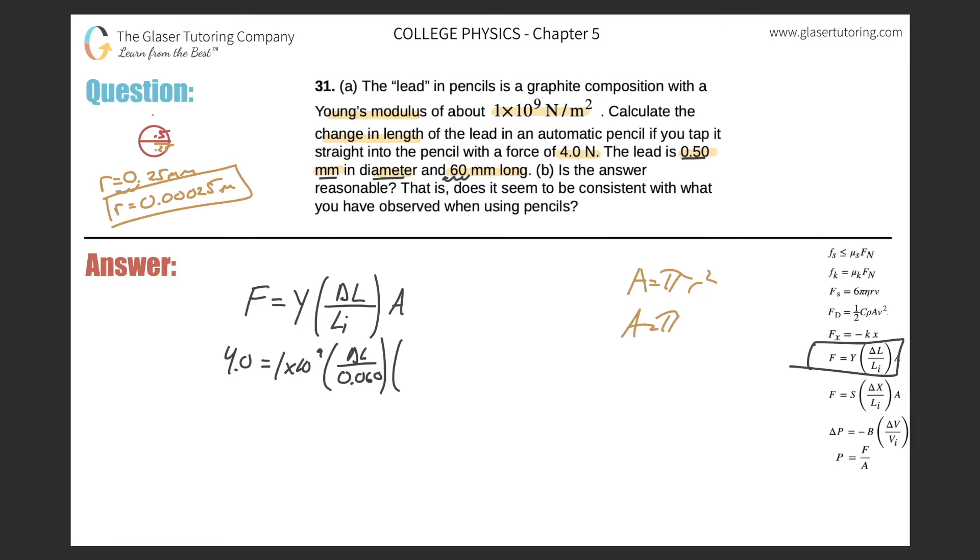So the area will be equal to pi times 0.00025 squared. So just simply calculate that area. It's going to be pi times 0.00025 squared, so we have 1.96 times 10 raised to the negative 7, and that's meters squared. So this is the cross-sectional area.